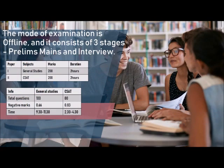The mode of the examination is offline, and it consists of three stages: Prelims, Mains, and Interview. Prelims can be divided into GS and CSAT. It is MCQ type consisting of 100 questions. GS1 — each question carries 2 marks and 0.66 negative marks for a wrong answer. CSAT — each question carries 2 marks and 0.83 negative marks for the wrong answer.